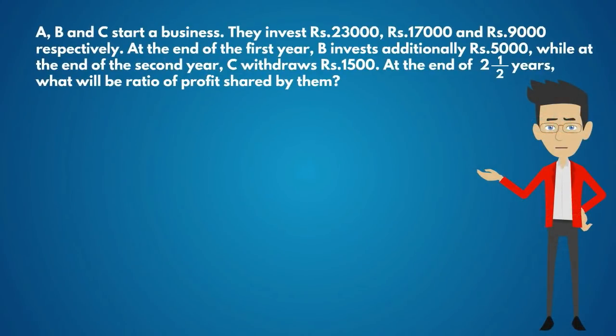A, B and C start a business. They invest Rs. 23,000, Rs. 17,000 and Rs. 9,000 respectively. At the end of the first year, B invests additionally Rs. 5,000, while at the end of the second year, C withdraws Rs. 1,500. At the end of two and a half years, what will be the ratio of profits shared by them?